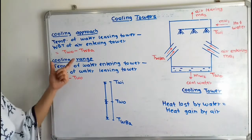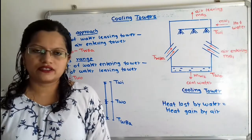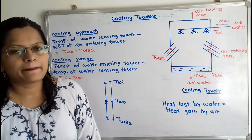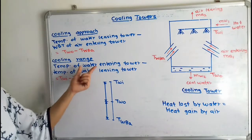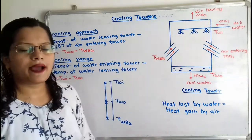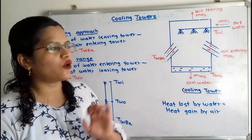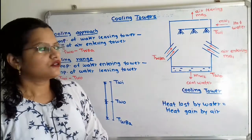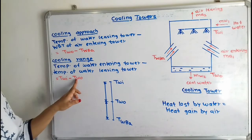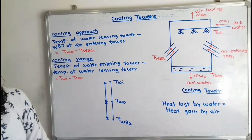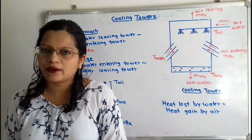The next parameter is cooling range. This is also a temperature difference: the temperature of water entering the tower minus the temperature of water leaving the tower. So cooling range equals TWI minus TWO. Now we will understand this with the help of a diagram.